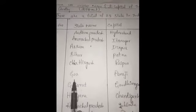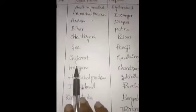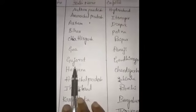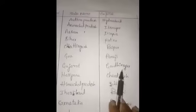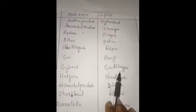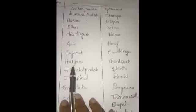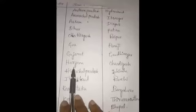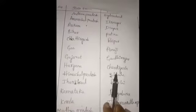Chhattisgarh state's capital is Raipur. Goa state's capital is Panaji. Next, Gujarat state's capital is Gandhinagar. Haryana state's capital is Chandigarh.